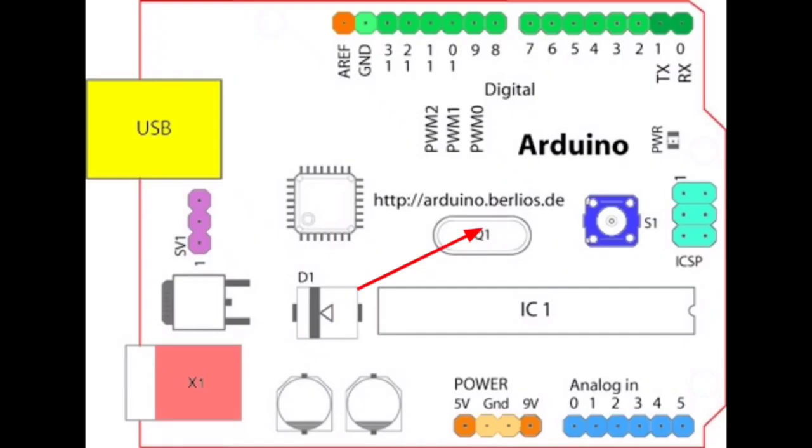This is crystal oscillator used to control the speed of microcontroller which is 16 megahertz and this is a header pin.